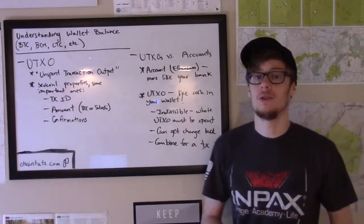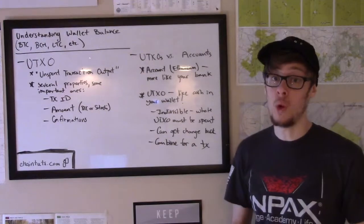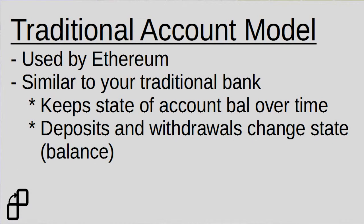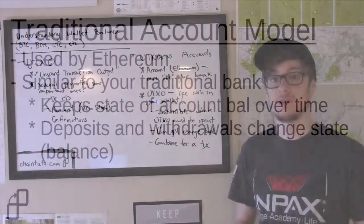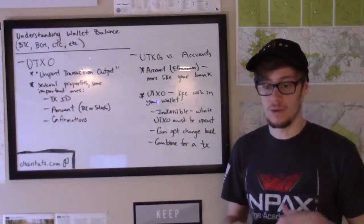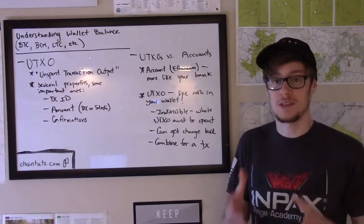Now we can talk about the UTXO model versus the account model of storing information about who owns what. The traditional account model is used in Ethereum and acts much like an account at your local bank. There's some state stored over time about your deposits, your withdrawals, and the total running balance based on the sum of those things — a ledger that stores what you spent, what you received, and the current state of your balance.